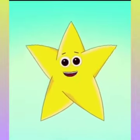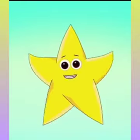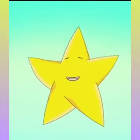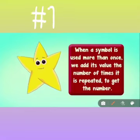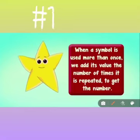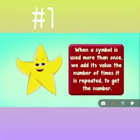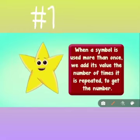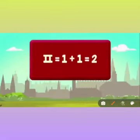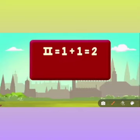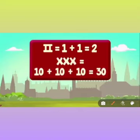Rule number 1: when a symbol is used more than once, we add its value the number of times it is repeated to get the number. For example, II equals 1 plus 1 equals 2, and XXX equals 10 plus 10 plus 10 equals 30.